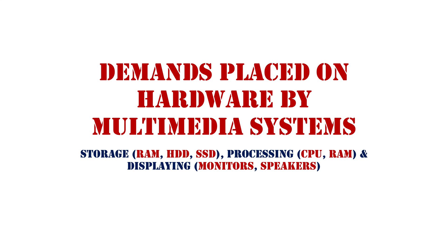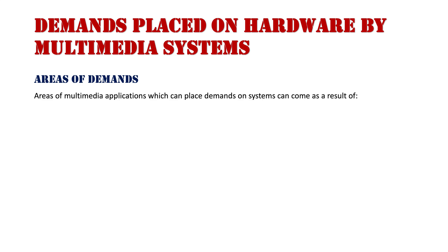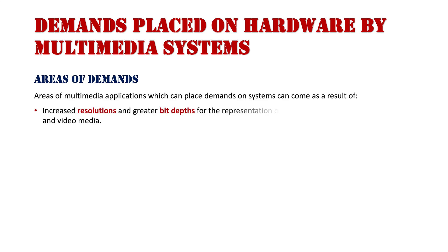Demands placed on hardware by multimedia systems — storage, processing, and displaying. Because multimedia systems use different media types such as image, video, animation, and audio, they all have relatively large file sizes. The first factor is increased resolutions and bit depths for the representation of color and image data in animation, video, and image.